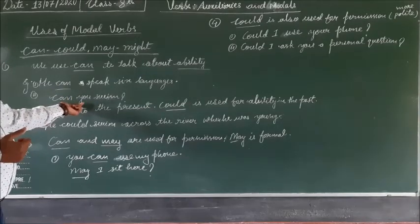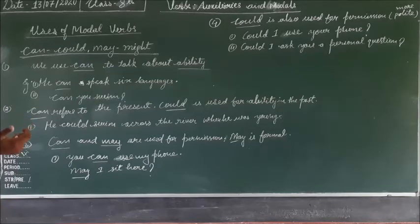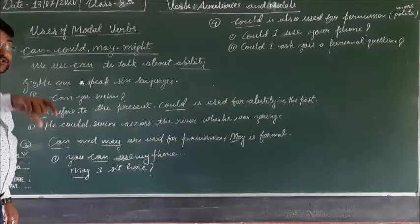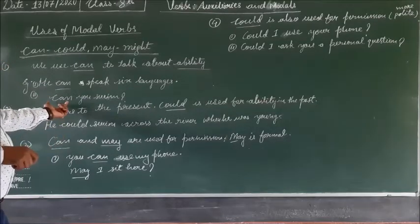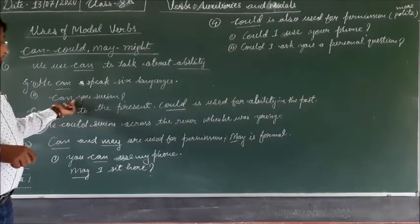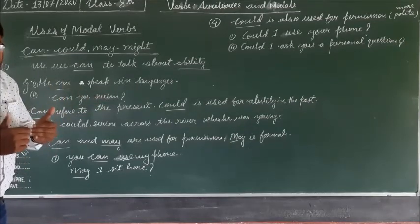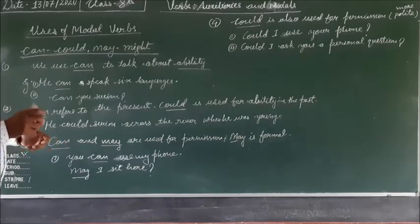The second example is 'Can you swing?' Here the ability is to swing — he can swing, meaning he is able to swing. So again, can is used to express ability in the present.